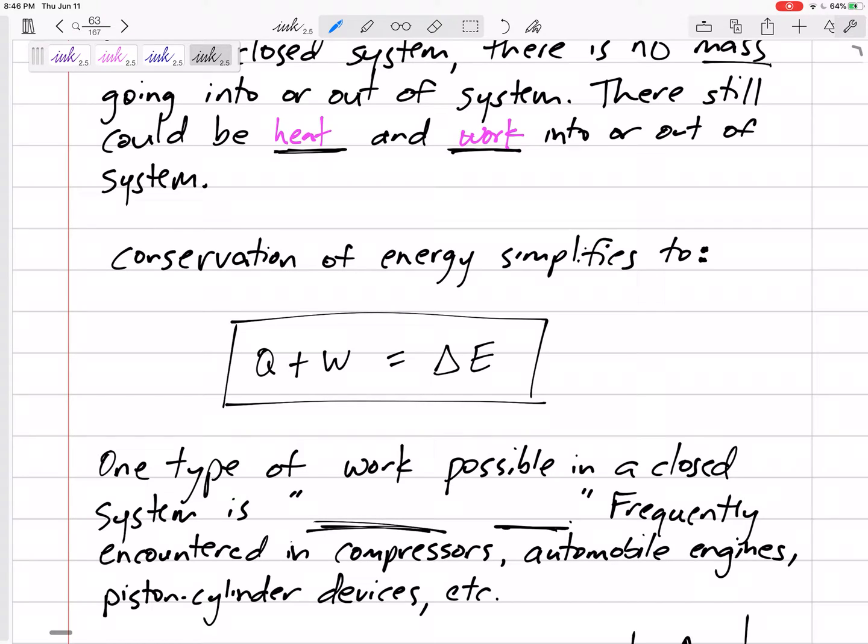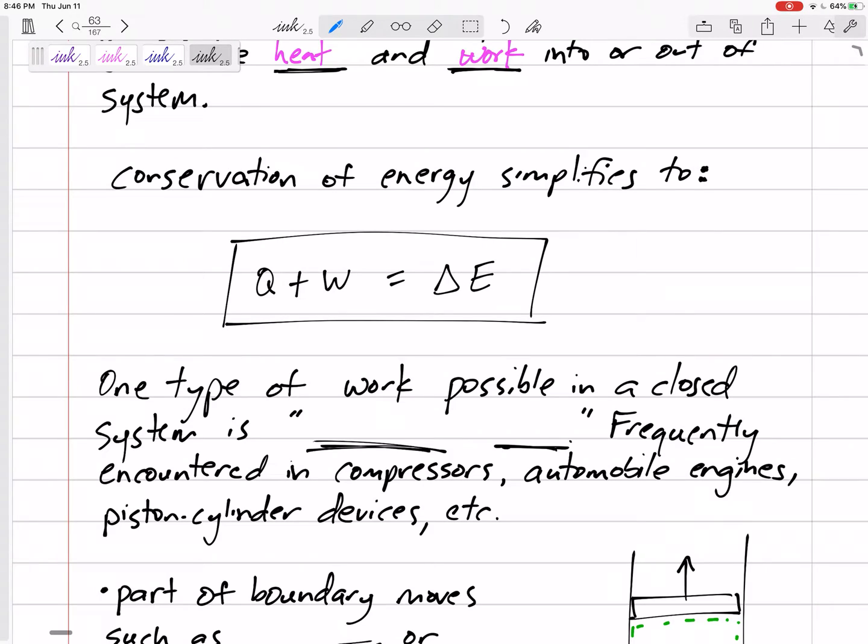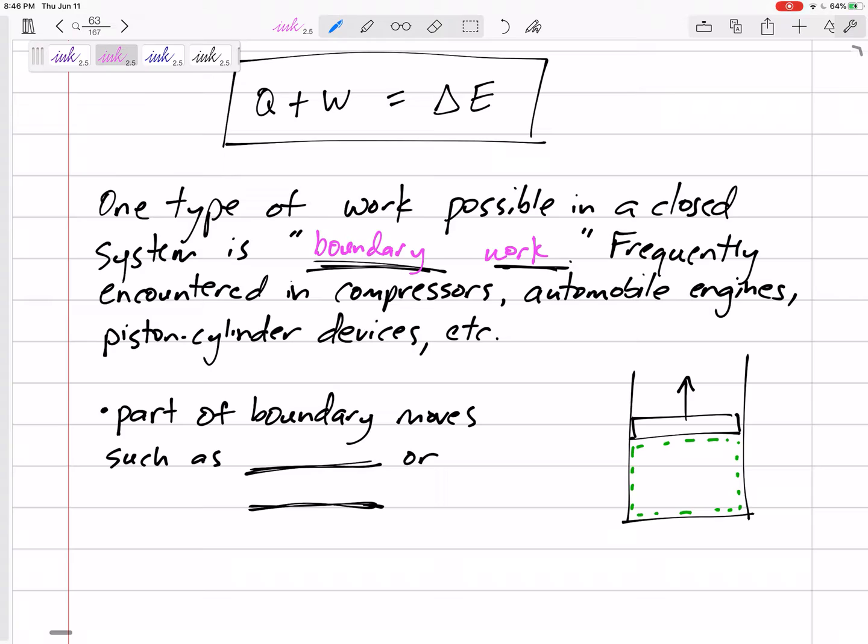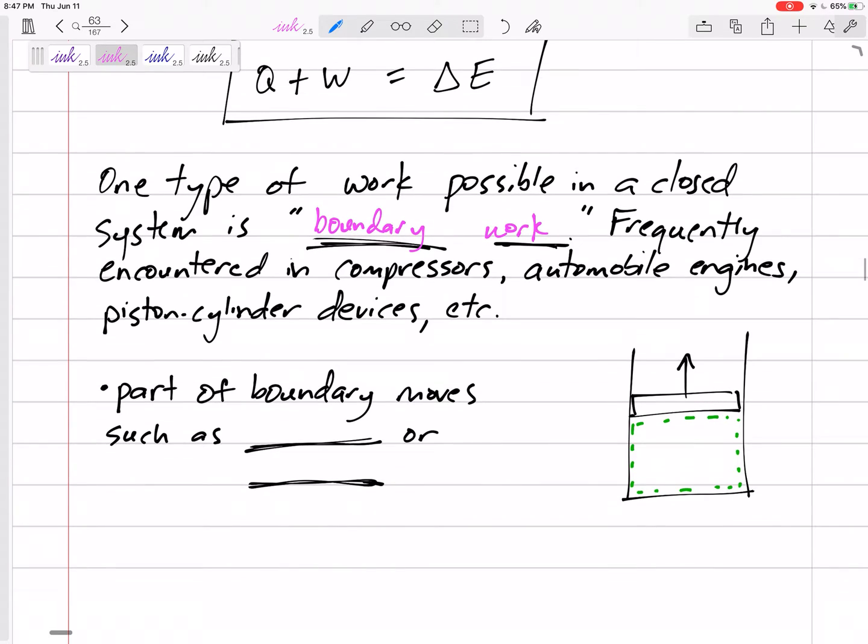Okay, so the very first section, 4-1, is all about boundary work. One type of work possible in a closed system is boundary work. Boundary work, and we'll see it in compressors, engines, piston-cylinder devices, it's when the boundary moves. So if the boundary is moving, then we might need to worry about boundary work. So if we have expansion or compression, if our boundary is moving, getting larger.